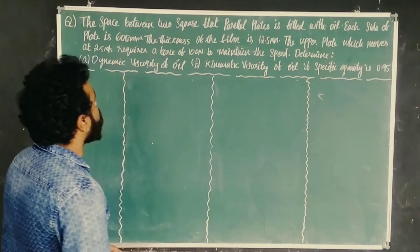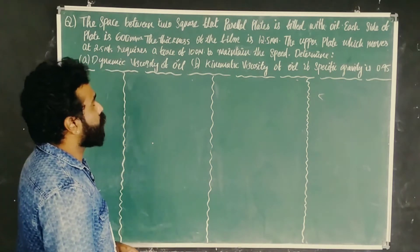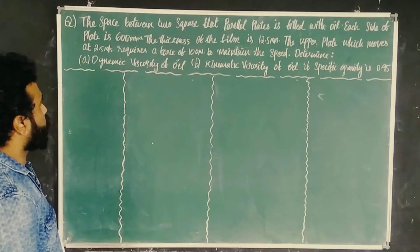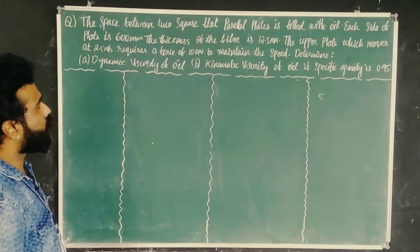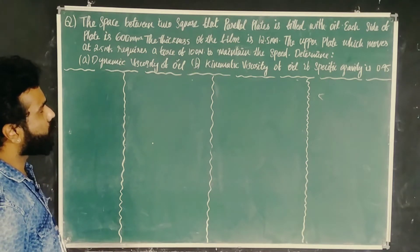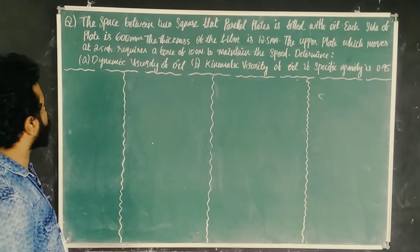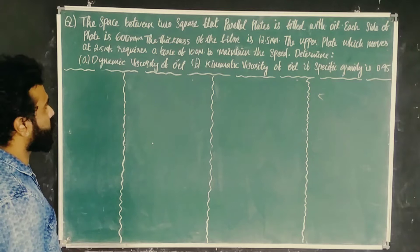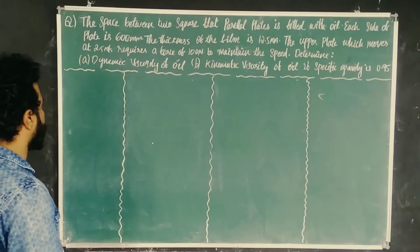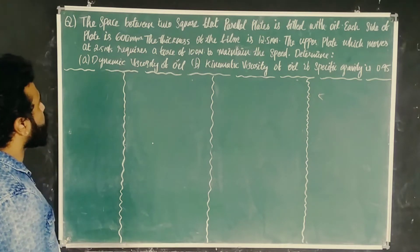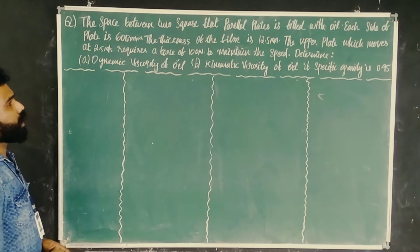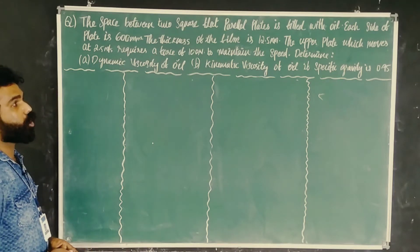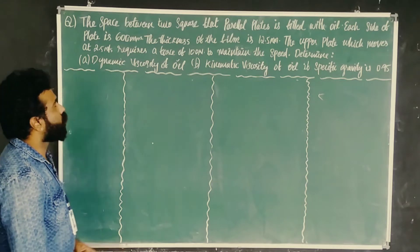The space between two square flat parallel plates is filled with oil. Each side of the plate is 600 mm. The thickness of the film is 12.5 mm. The upper plate which moves at 2.5 m per second requires a force of 100 N to maintain the speed. Determine the dynamic viscosity of the oil and kinematic viscosity of the oil if the specific gravity of the oil is 0.95.